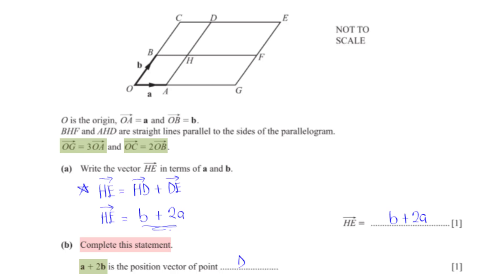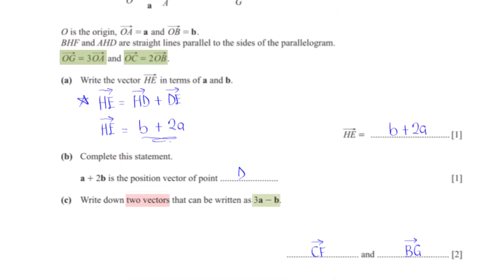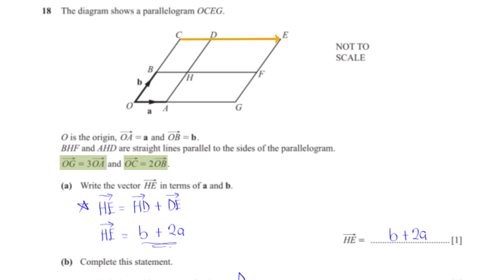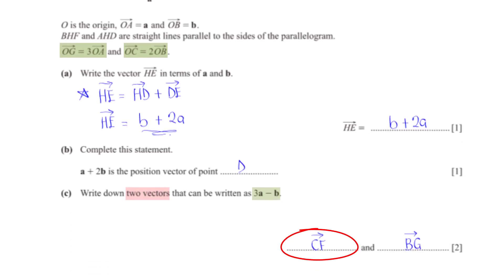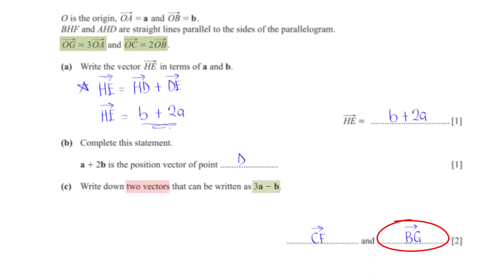Complete this statement: a plus 2b is the position vector of point dash. Starting from the origin, moving in the a direction then twice in the b direction, we land at point D. Two vectors that can be written as 3a minus b are CF and BG: from C, moving three times in the a direction and once in the negative b direction lands on F; from B, the same movement lands on G.